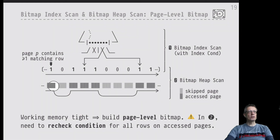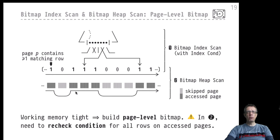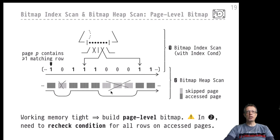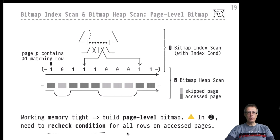We see that we have to access particular pages and may skip others, but for all pages where matching rows are located, the only way to find them is to visit each row inside those pages, evaluate the index condition, and identify the matching rows. We can still skip pages that contain no hits at all. This is why we need to recheck the index condition, and this explains the recheck condition entry in the explain plan.